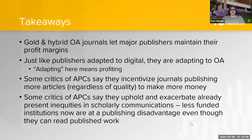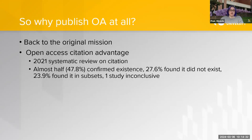Gold and hybrid open access let major publishers maintain their high profit margins — they adapted to OA just as they adapted to digital, finding ways to profit from it. Critics of APCs argue they incentivize journals to publish more articles regardless of quality, since more publications means more revenue. Paper mills were a problem before and still are. Other critics say APCs uphold existing inequities — if you were at a subscription disadvantage before, you're now at a publishing disadvantage too.